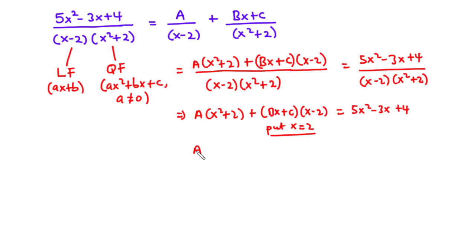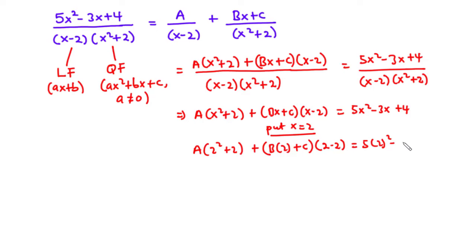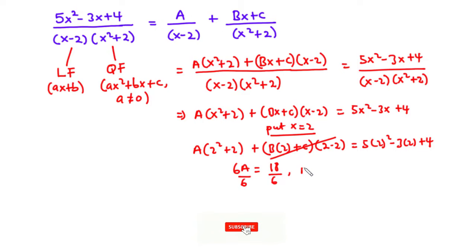Substituting x equals 2: A times (2 squared plus 2) plus (B times 2 plus C) times (2 minus 2) equals 5 times 2 squared minus 3 times 2 plus 4. Since 2 minus 2 is 0, that term vanishes. So 6A equals 20 minus 6 plus 4, which is 18. Dividing, we get A equals 3.